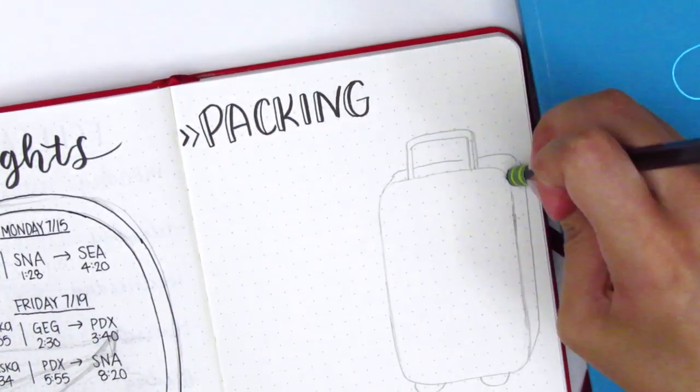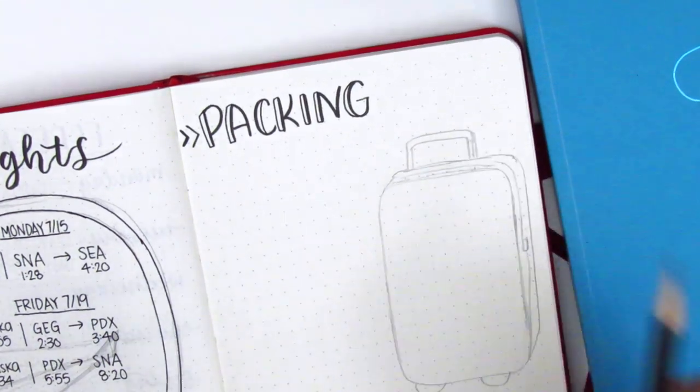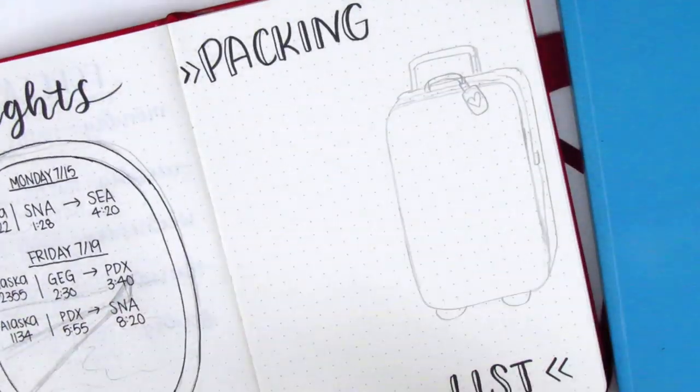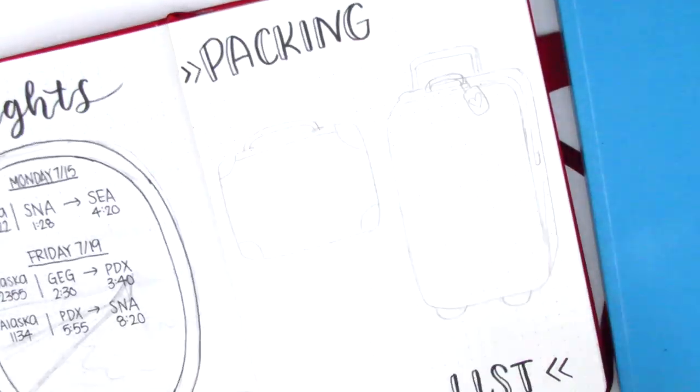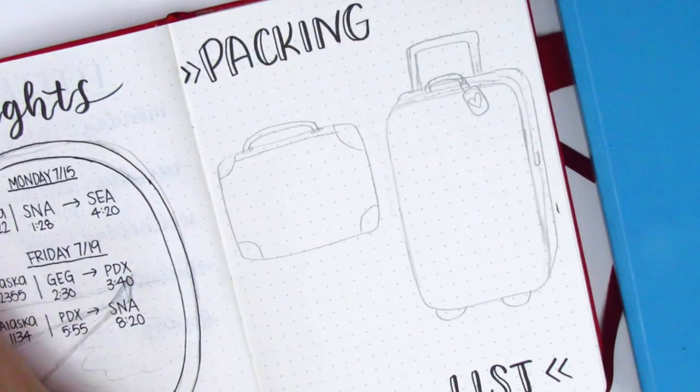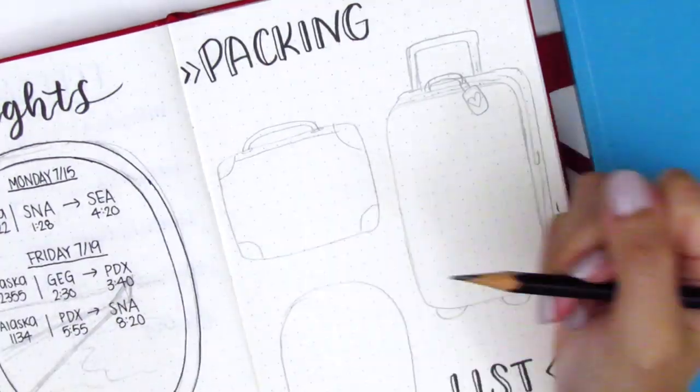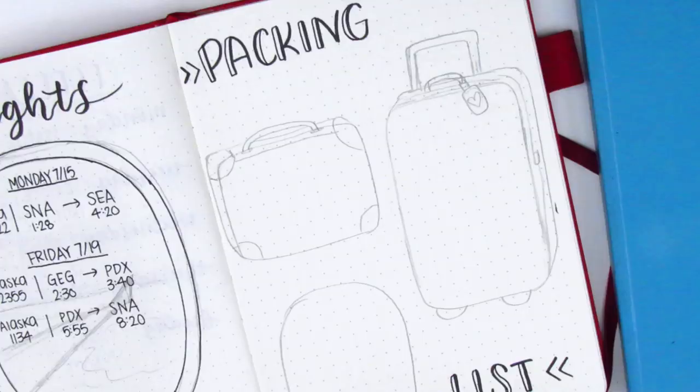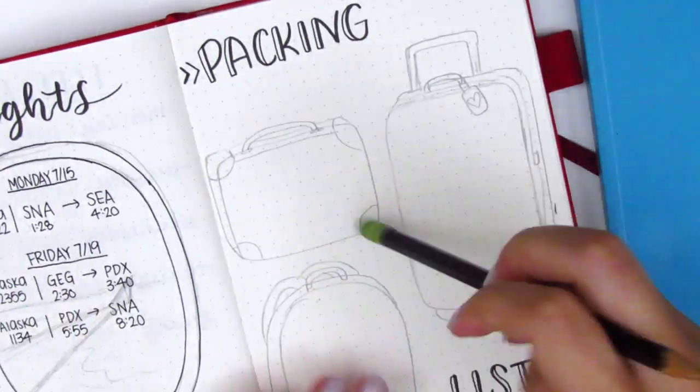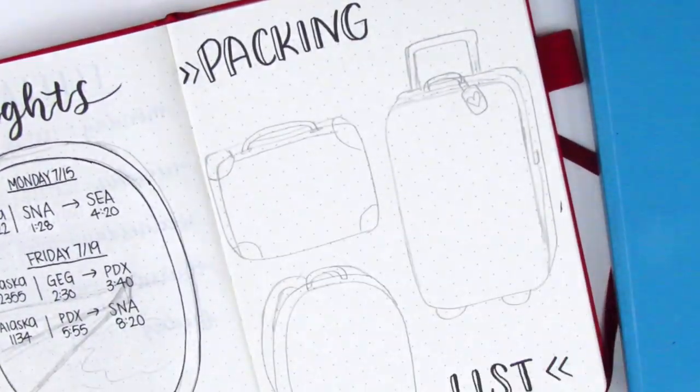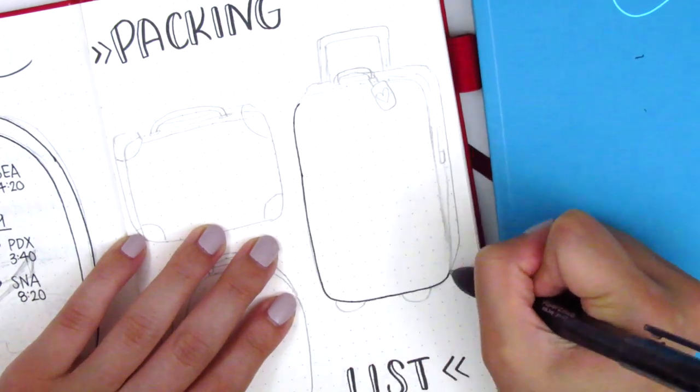Once I finished drawing the suitcases, I go ahead and write down all of the items that I was going to bring on the trip. I did end up having to forego a lot of the items that I listed because I forgot that I only had a carry-on that I could take, and all these items were not able to fit in my carry-on. So I did end up only packing like half of the things that I listed, which is totally fine because at least I had something to go off of.